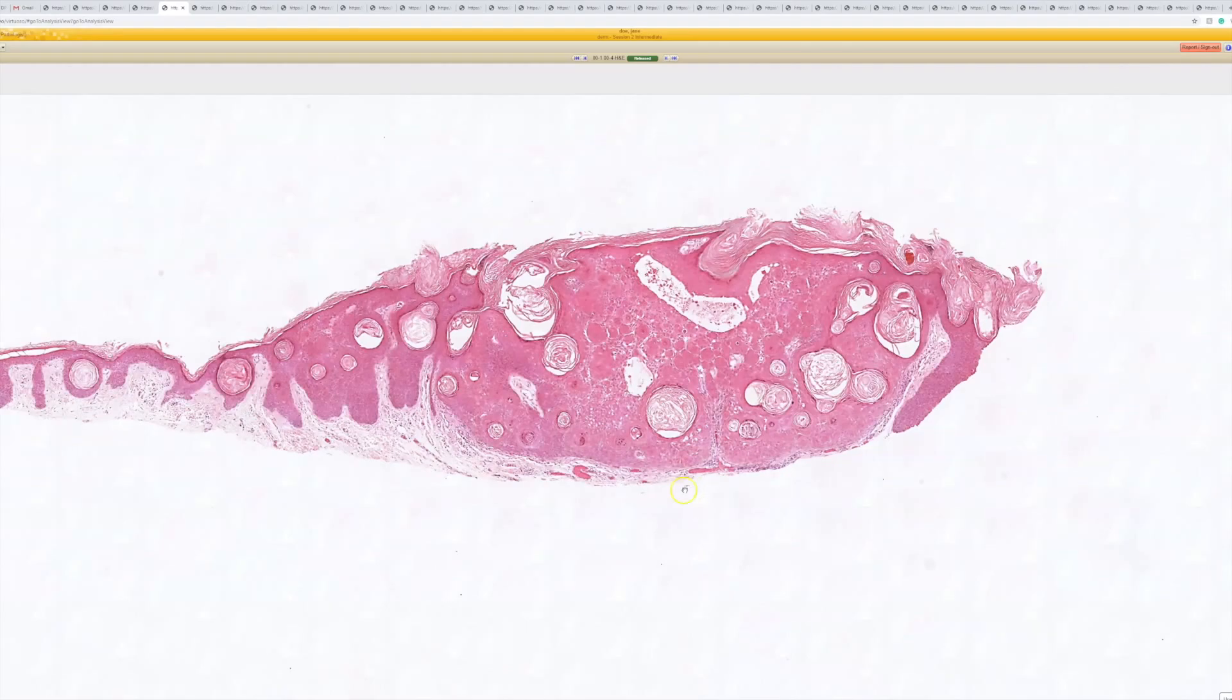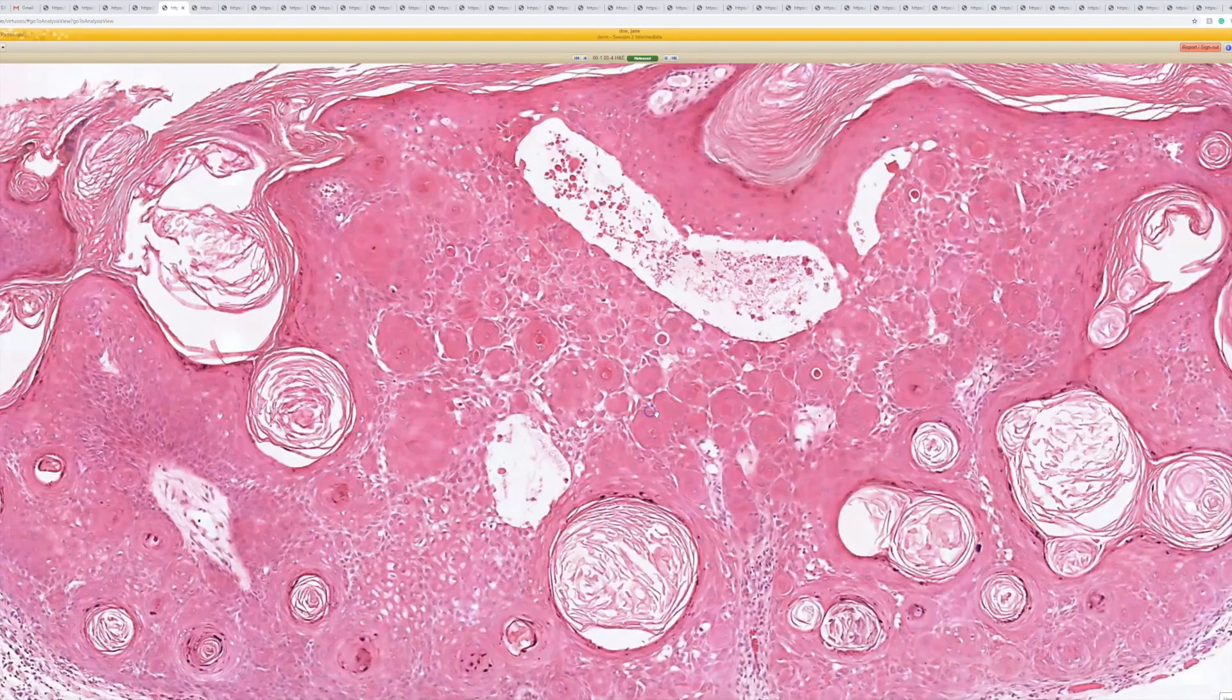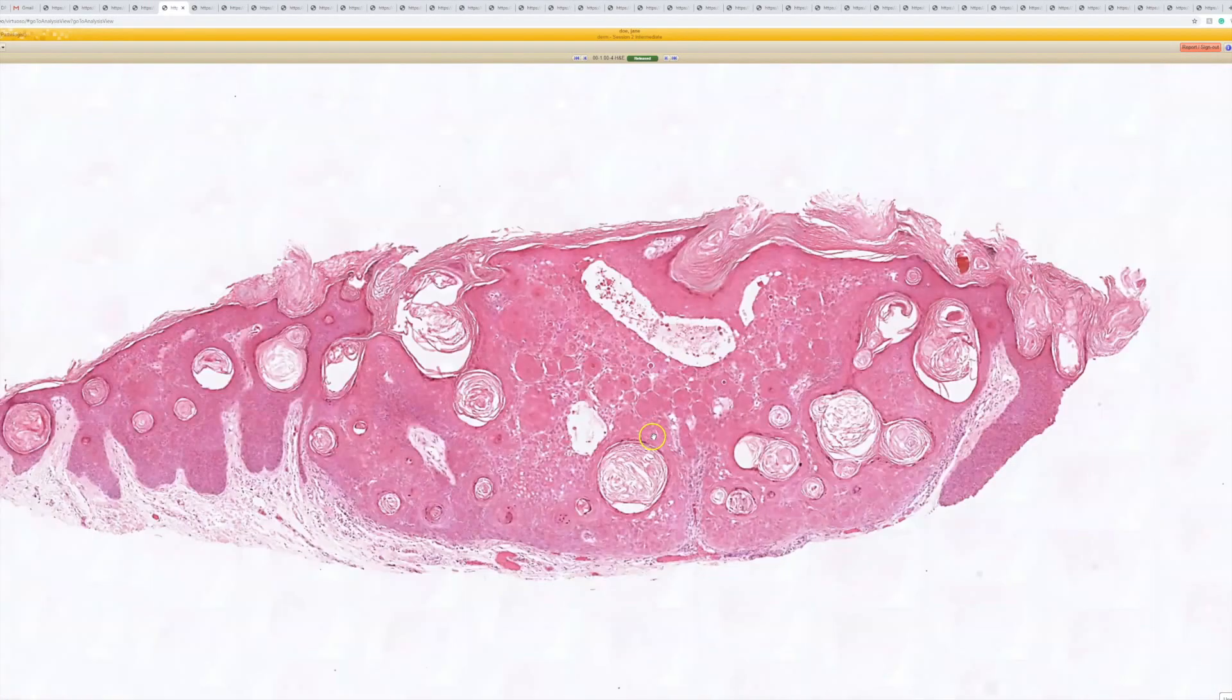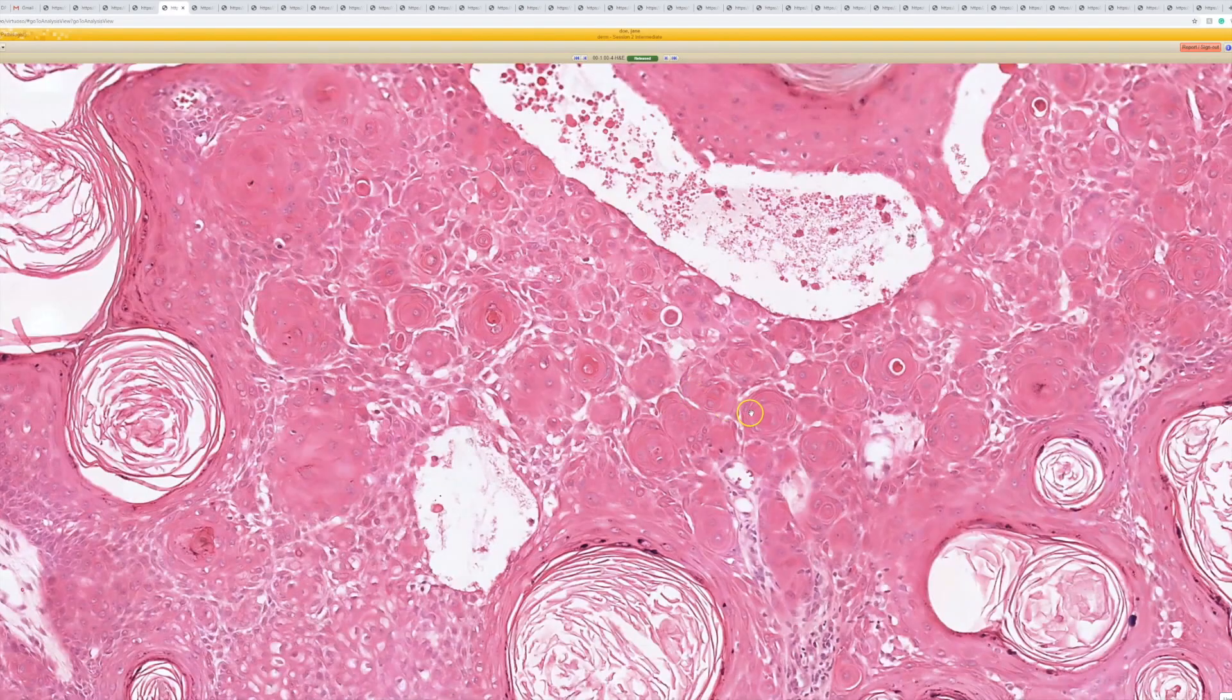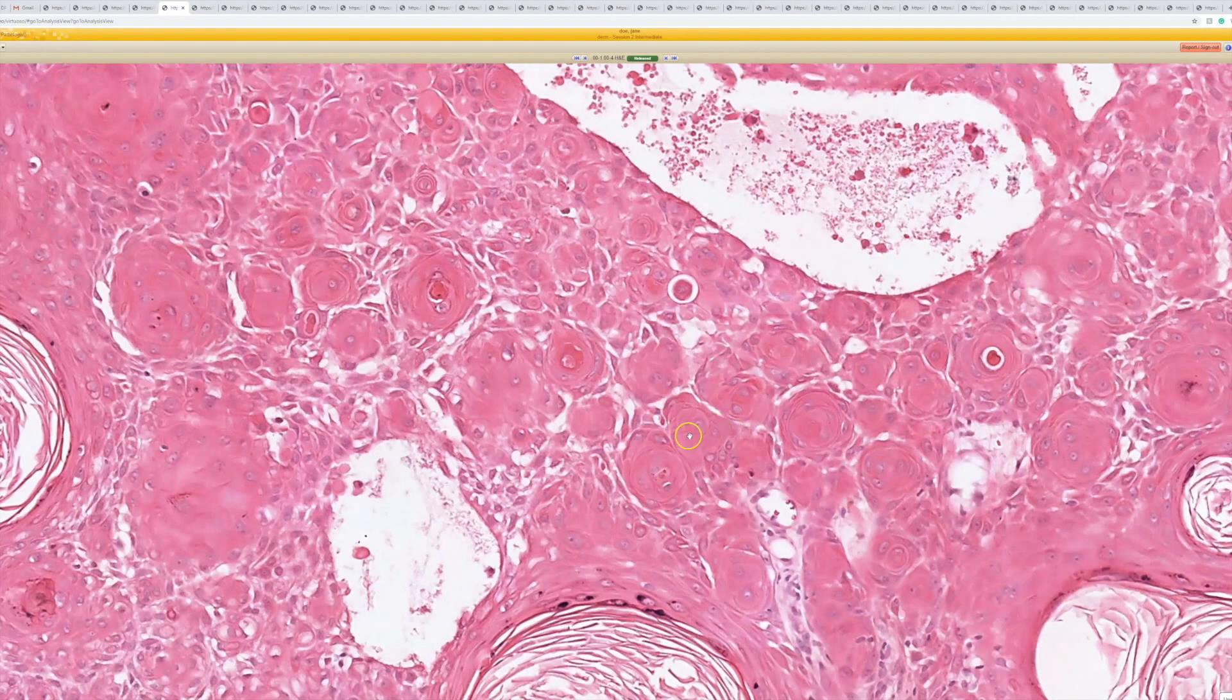I see a lot of squamous eddies, so maybe irritated. Yeah, good. It's a perfect acanthotic lesion of bland keratinocytes with nice horn pseudocysts, so it's a seb, and when you get a seb plus the nice swirly, whirly squamous eddies, then that's what you call an irritated seborrheic keratosis.